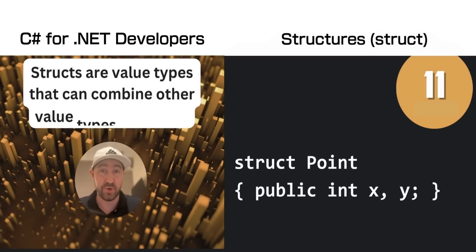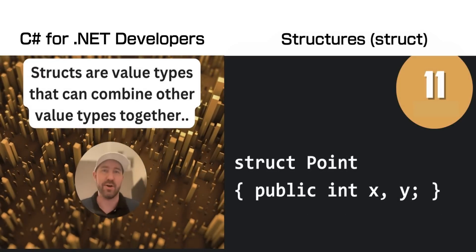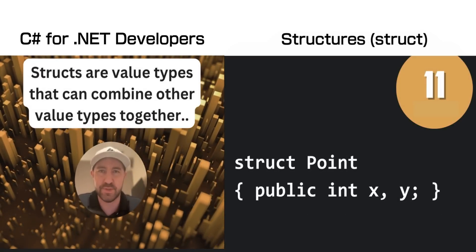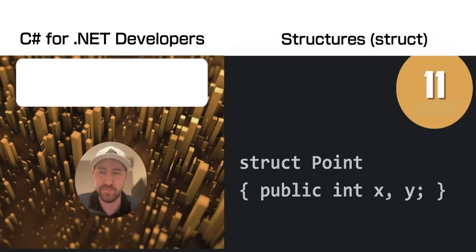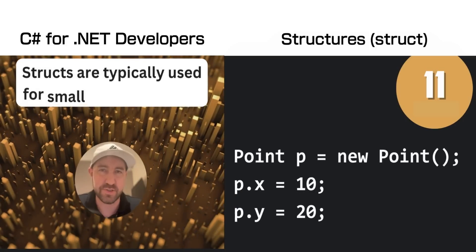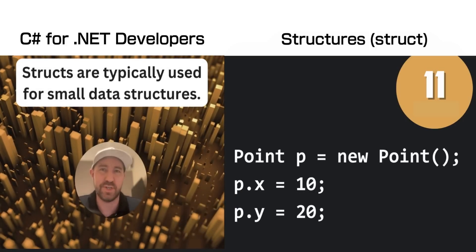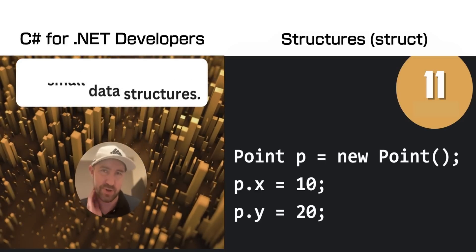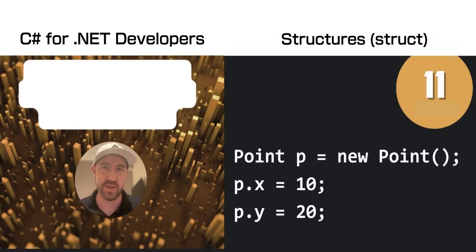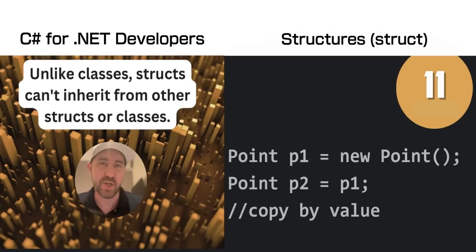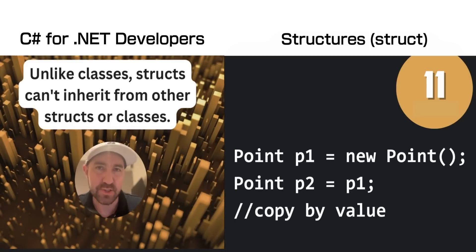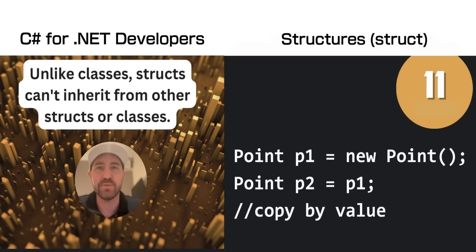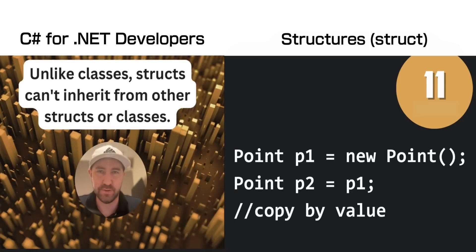Structs, or structures, are value types that can combine other value types together. Structs are typically used for small data structures, such as the point struct you can see here. Structs might look like classes, which we'll talk about later, but they are not — they cannot inherit from each other.